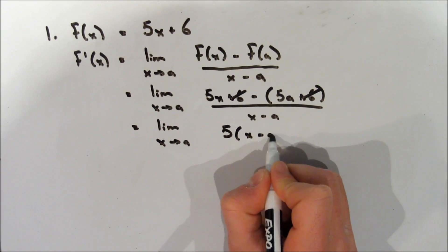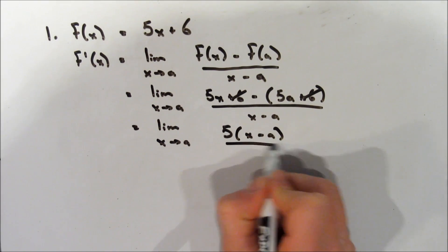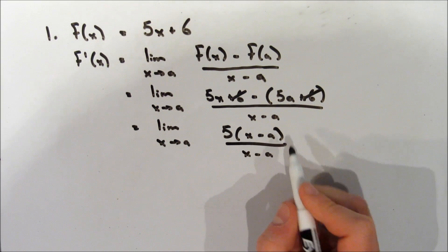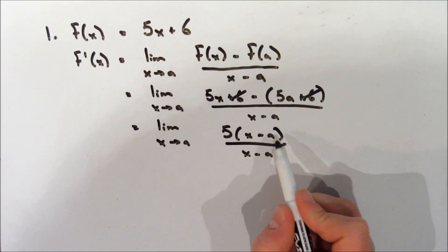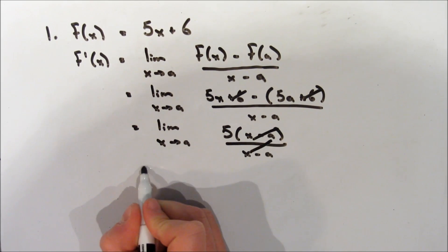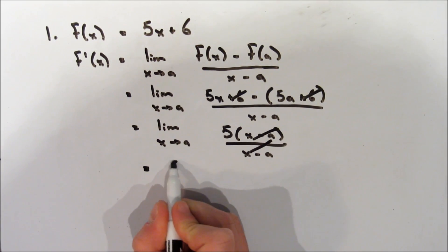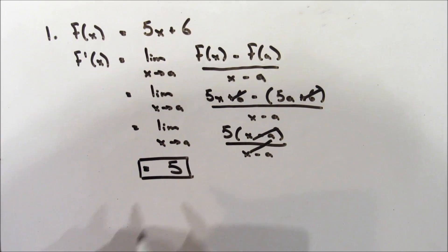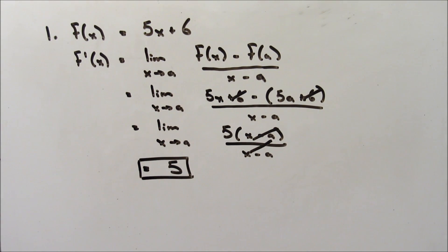Now we're left with the limit as x approaches a of 5x minus 5a, which we can factor. As you can see, x minus a is a factor on both the top and the bottom of the fraction. So we can cancel them out, and we're left with the derivative being just 5.